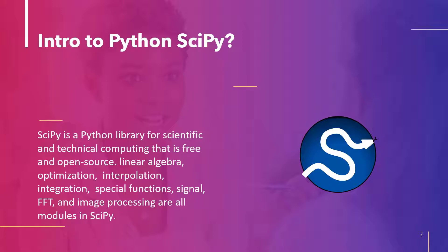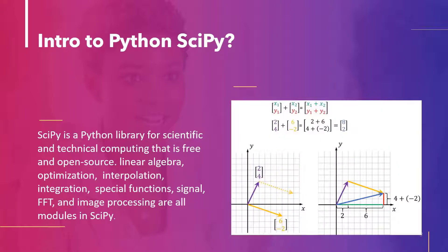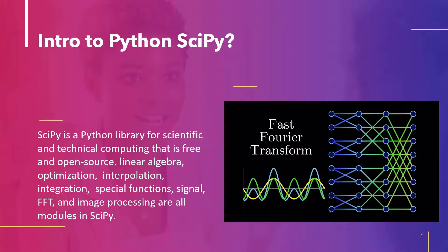SciPy includes several modules. Optimization: to find the optimal solution from all possible solutions. Linear algebra: to deal with vectors and matrices as well as vector spaces and linear transformations. Interpolation: to calculate unknown values between known data points. FFT, which stands for Fast Fourier Transform: this package contains mathematical methods for converting a time function to a frequency function.